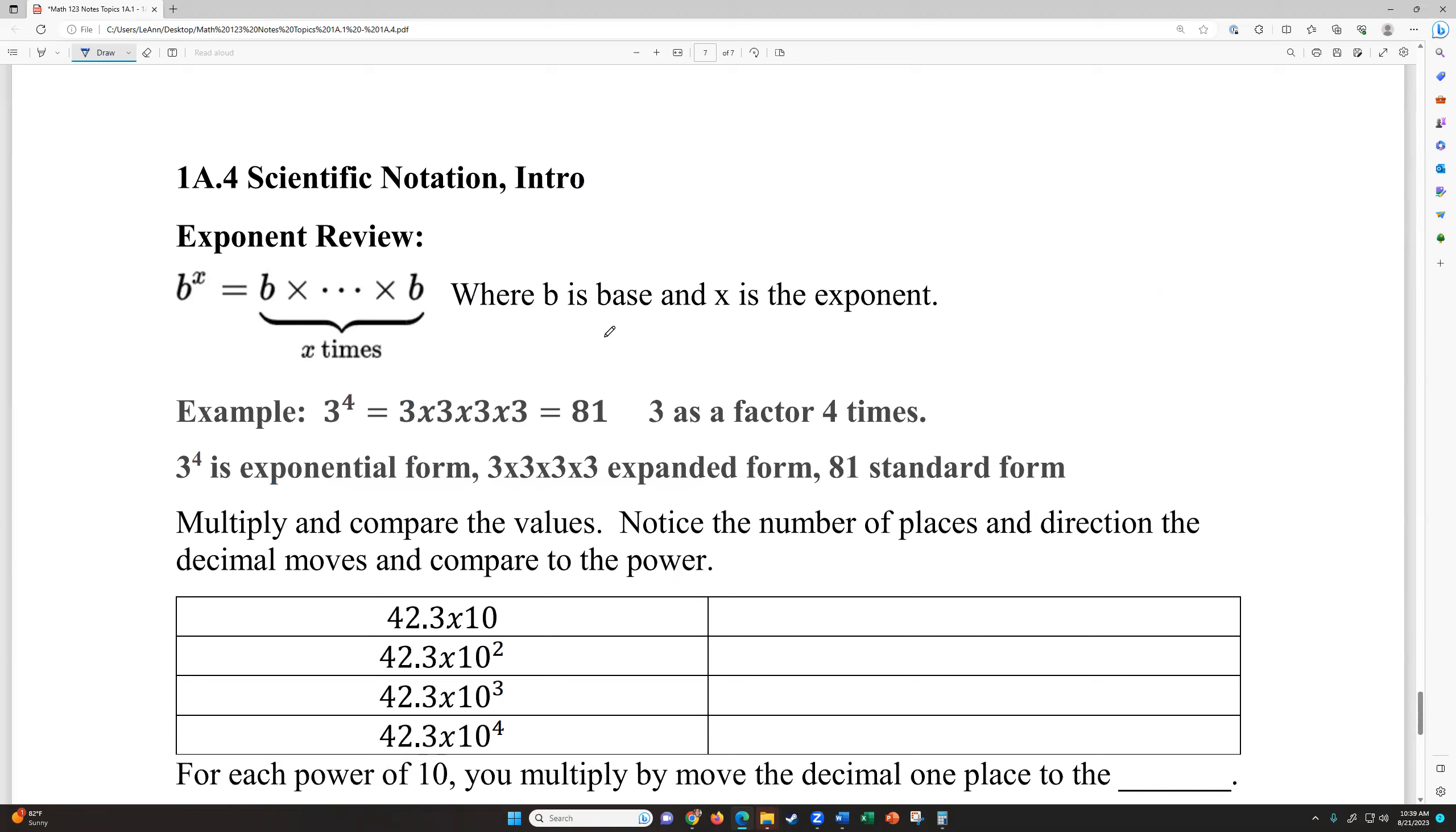Last thing for this video for today, scientific notation introduction. The rest of the scientific notation notes are part of the pre video for Wednesday. So make sure you're watching that as well, because that homework on Wednesday night does have you doing some scientific notation. So the basics just converting back and forth. So to be able to do scientific notation, you first have to know what an exponent is. An exponent is a way to write repeated multiplication. So B to the X is B multiplied times B multiple times. And how many times we multiply it is the exponent. So three to the fourth is multiplying three four times together. So that is three times three times three times three, which equals 81, three as a factor four times. That's what we mean when we say three to the fourth.